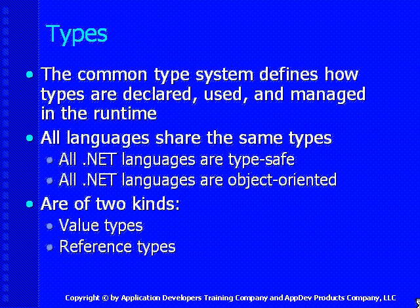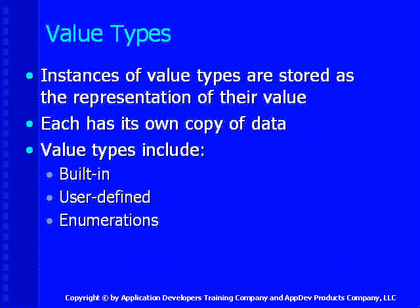We've mentioned types a couple of times. In the .NET framework and Visual Studio, you'll notice there's a common type system. No matter which language you use, you're actually using the same underlying types. The common type system defines how types are declared, how they're used, and how they're managed within the runtime environment. All languages share the same types that are type-safe and object-oriented. There are really two kinds of types: value types and reference types. When you assign a value type to a variable, it creates a copy of the value, stores it on the stack rather than the heap, and each instance has its own copy of the data.